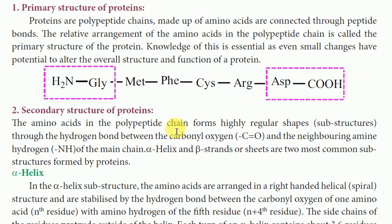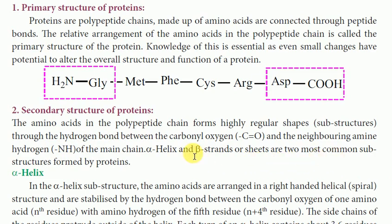Secondary structure: the amino acids in the polypeptide chain form regular shaped substructures through hydrogen bonds between the carbonyl oxygen and the neighboring amino hydrogen of the main chain. Alpha helix and beta strands or sheets are the two most common substructures formed by proteins.